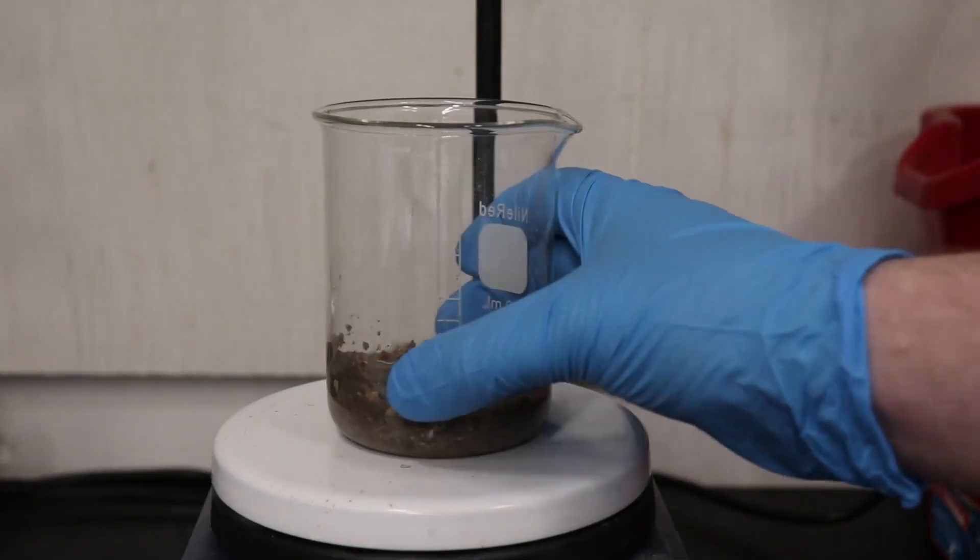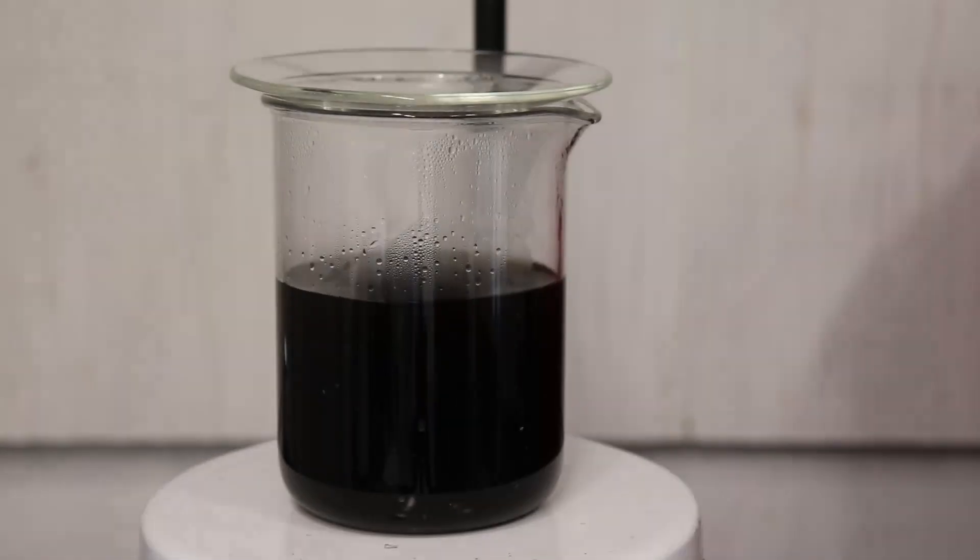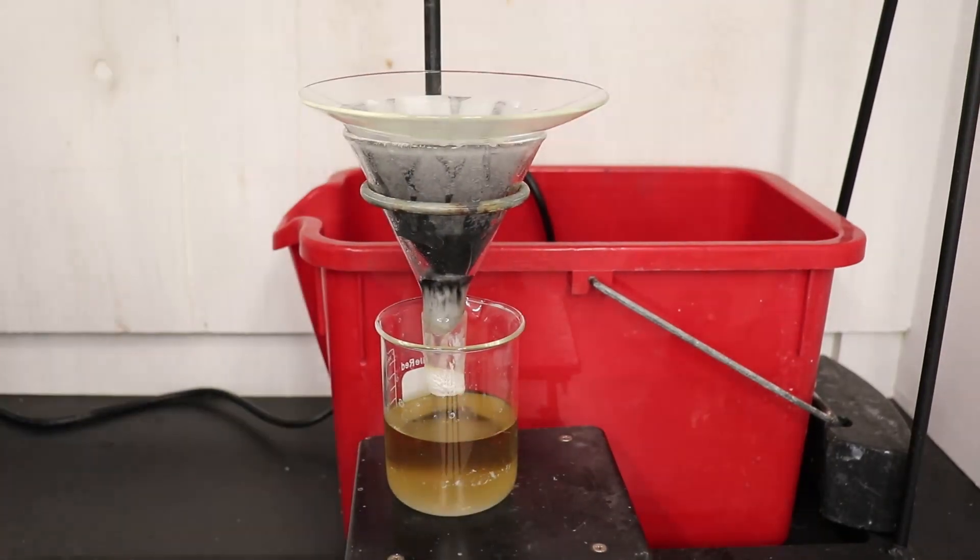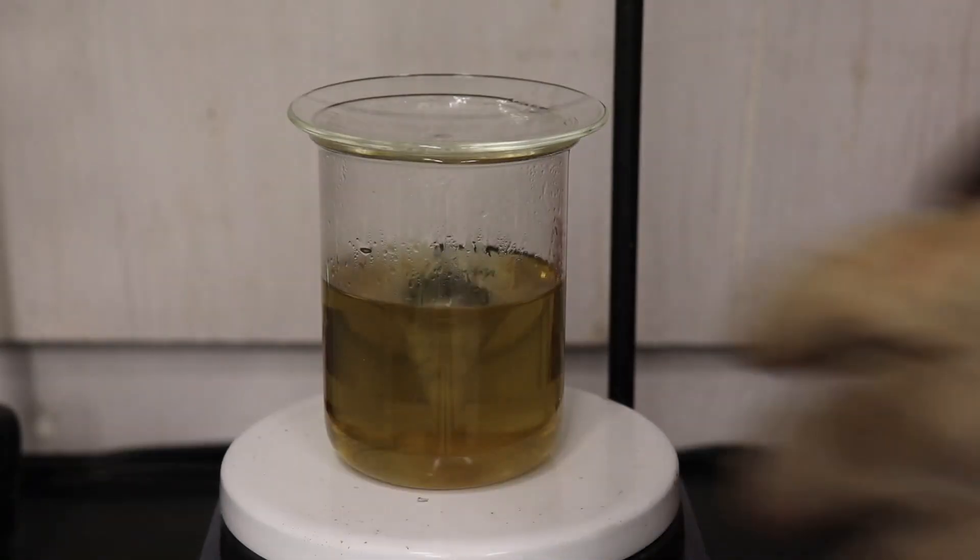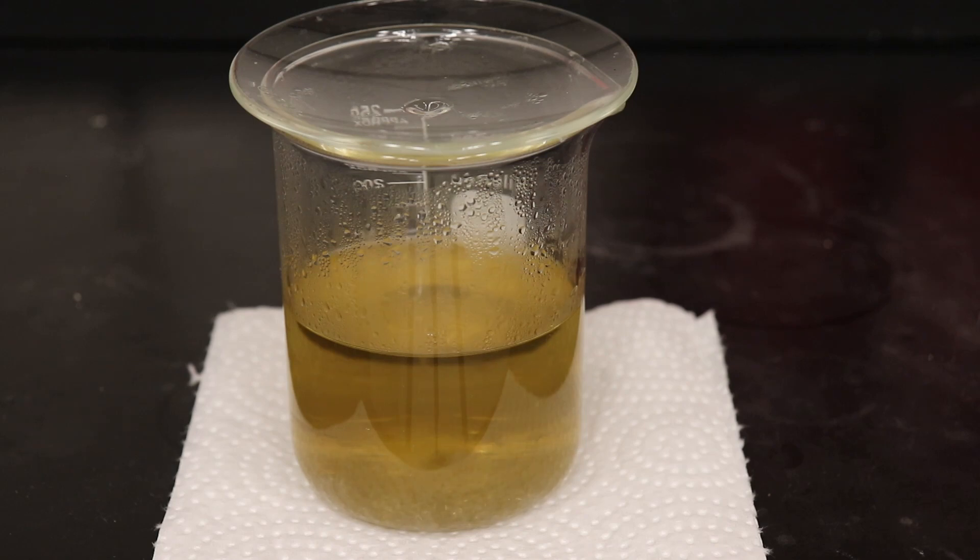I then dissolved the crude material in a minimal amount of boiling ethanol. I added some activated charcoal and then hot filtered the solution, and this time it seemed to have successfully removed the darkly colored impurities. The solution cooled down a little while filtering, so I reheated it to fully dissolve everything, and then set it aside to slowly cool and crystallize.